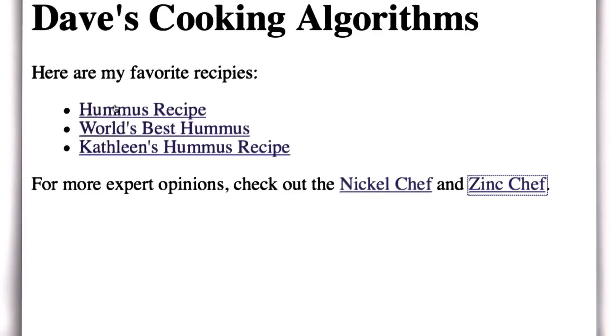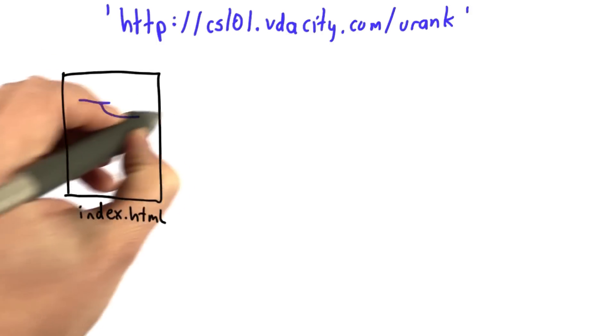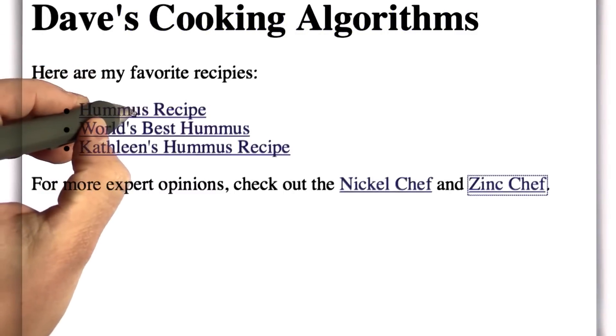So the first one goes to my favorite hummus recipe. So there is a link from index.html, and it goes to the page hummus.html. And if we follow that link,